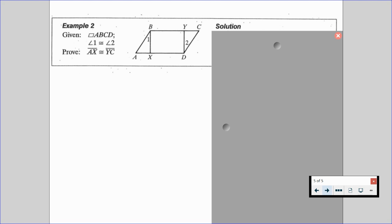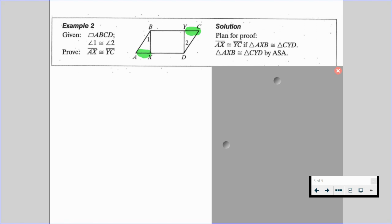Well, let's talk about working backwards for this proof. We'd be able to prove that AX is congruent to YC if we can show that the triangles that contain them are congruent. Well, we can show that these two triangles could be congruent by using ASA, since we know angle 1 is congruent to angle 2. And then we have parallelograms. So it is possible to show that we have by ASA.